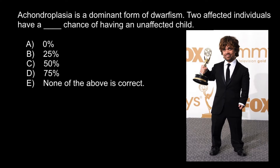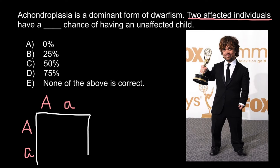For example, if we took two affected individuals, and if we know that this is a dominant genetic disorder, capital A means the defective allele and small a means the normal allele. So one parent is heterozygous for this genetic disorder, meaning that this parent has dwarfism, and another parent also has the same genotype and also has this genetic disorder.